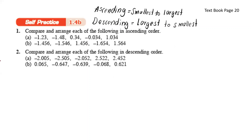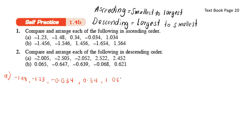Compare and arrange each of the following in ascending order. Ascending means smallest to largest. For 1a, the smallest number is negative 1.48, followed by negative 1.23, negative 0.034, 0.34, and 1.034.